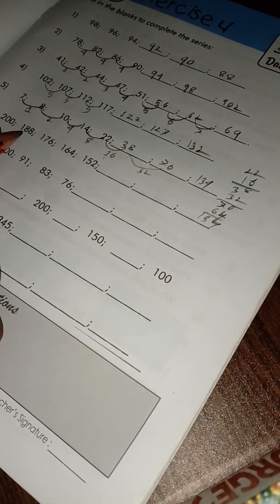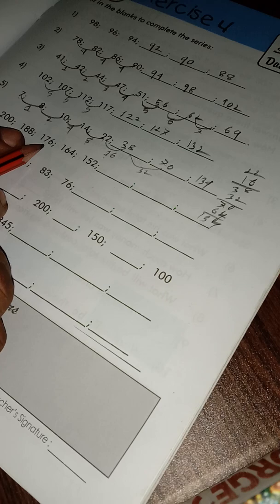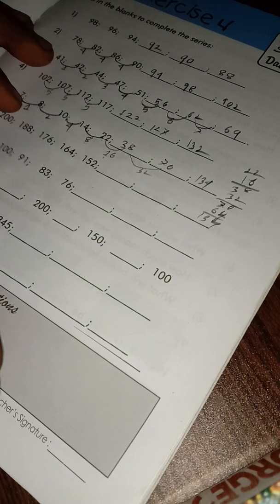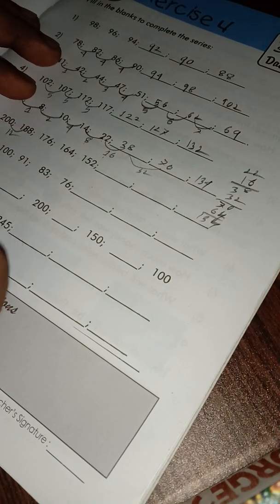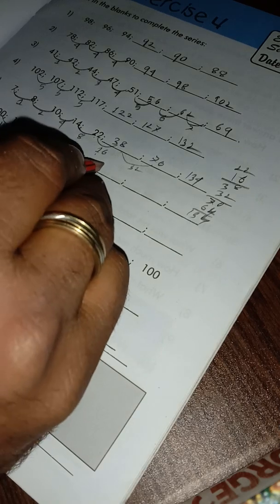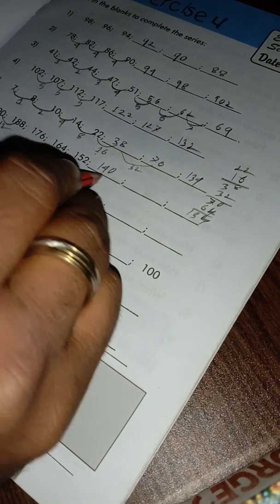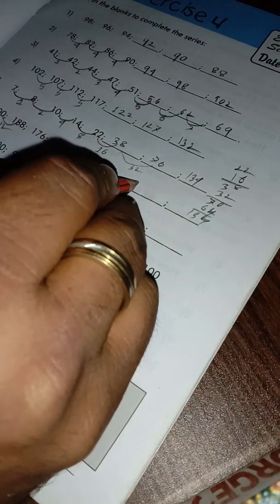Here we follow 200 minus 12 equals 188, minus 12 is 176, so decreasing by 12 here. So 164 minus 12 is 152, 152 minus 12 is 140, 140 minus 12 is 128, 128 minus 12 is 116.